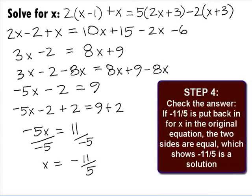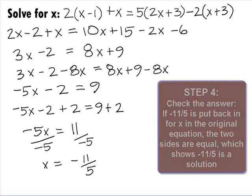In Step 4, we want to check our answer. Note that if you put a negative 11 over 5 back in for x in the original problem, the two sides will be equal, which shows that the negative 11 over 5 is the solution to our problem.